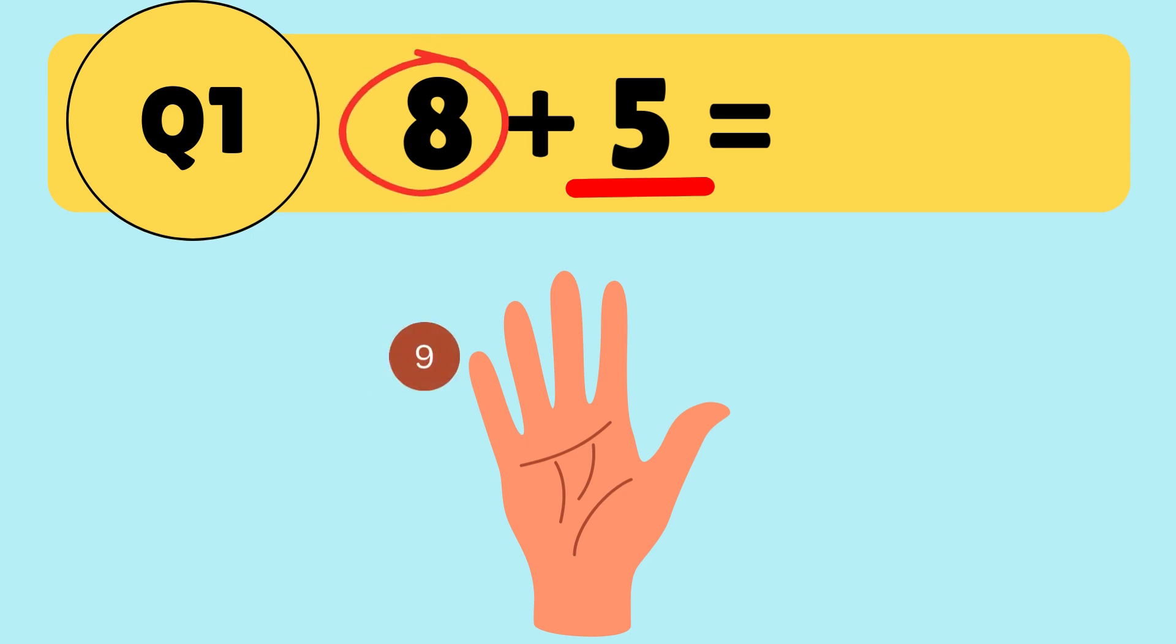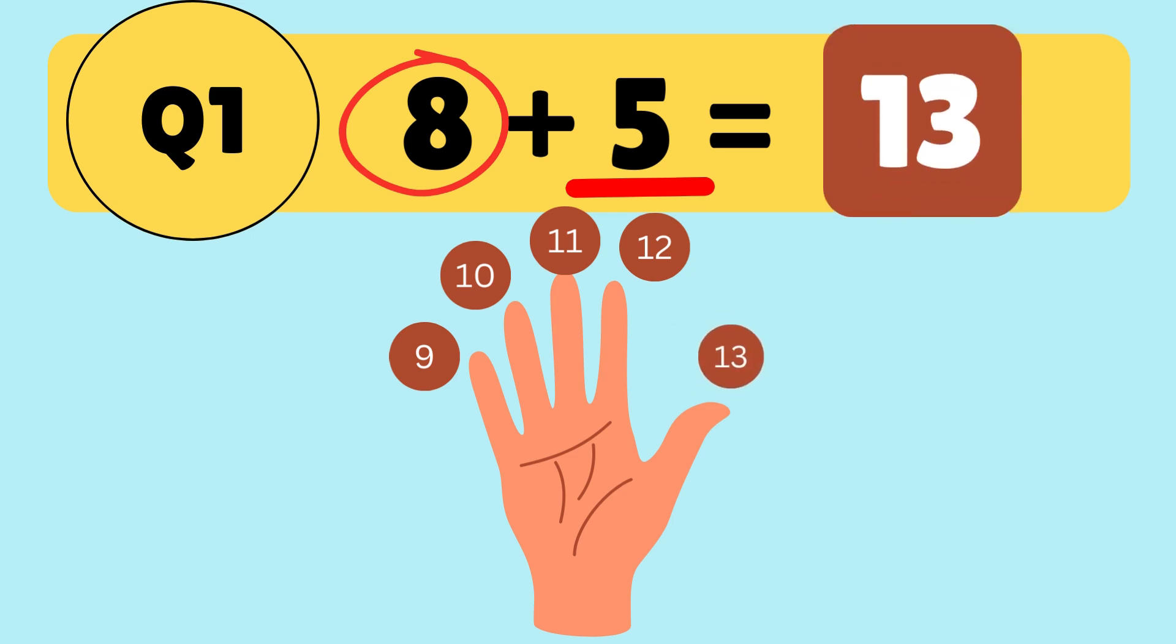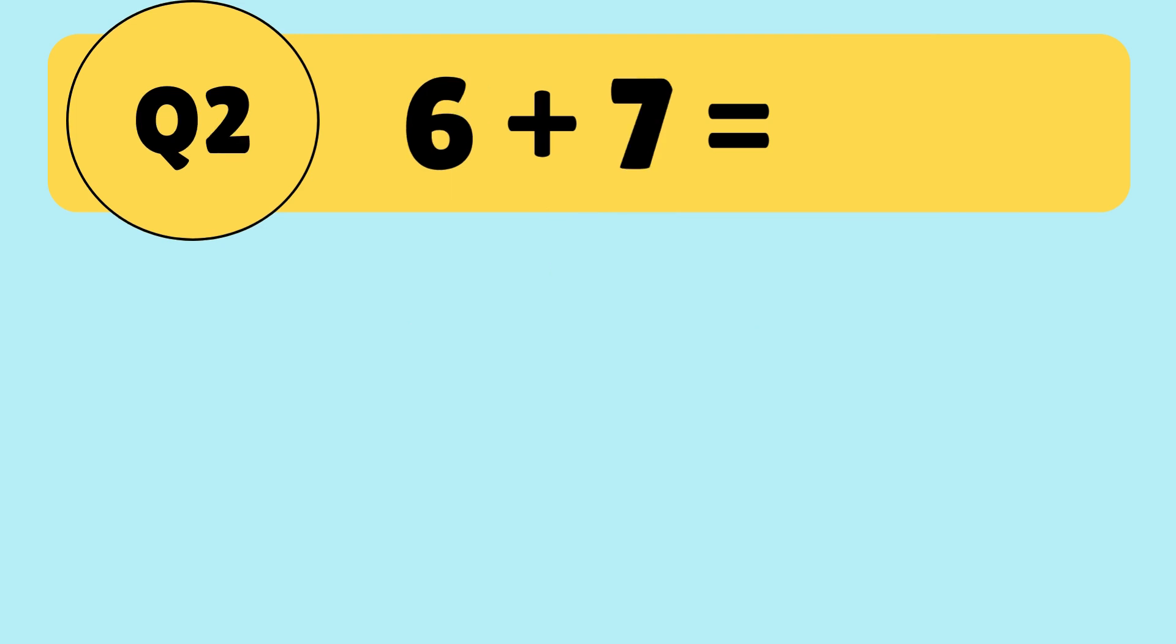8, 9, 10, 11, 12, 13. Therefore, 8 plus 5 is equal to 13. The second question is,